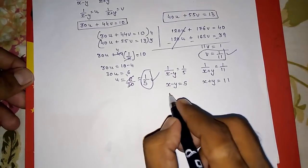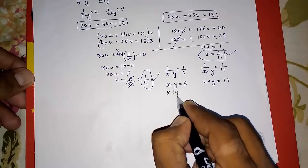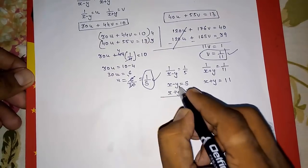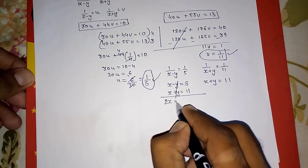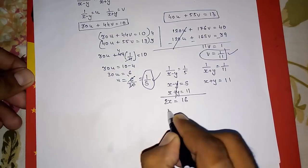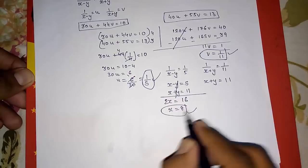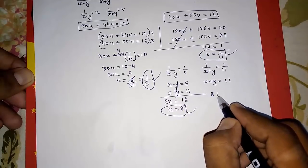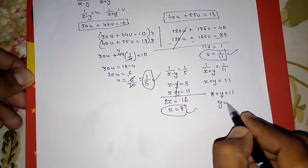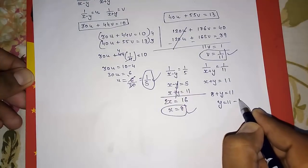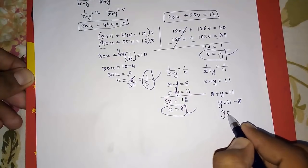Now we solve by elimination. Adding X - Y = 5 and X + Y = 11: 2X = 16, so X = 8. Substituting X = 8 into X + Y = 11: 8 + Y = 11, so Y = 11 - 8 = 3. The speed of the boat is 8 km/h and the speed of the stream is 3 km/h.